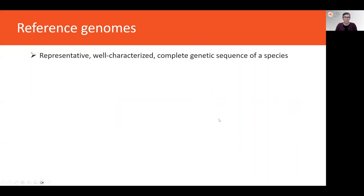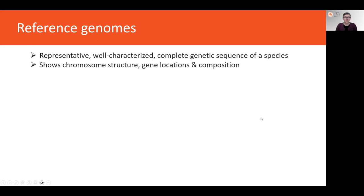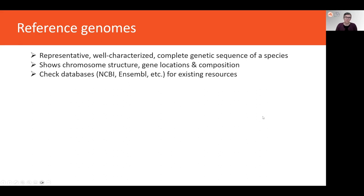A reference genome is a representative, well-characterised version of the complete genetic sequence of a particular species. It aims to encompass the entire genomic content of a species, including chromosome structure, genes and non-coding regions. Because of the expense and complexity of undertaking a reference genome sequencing project, it's always advisable to check genetic databases to see if there are any existing resources for your species of interest or closely related species — such as NCBI and Ensembl.